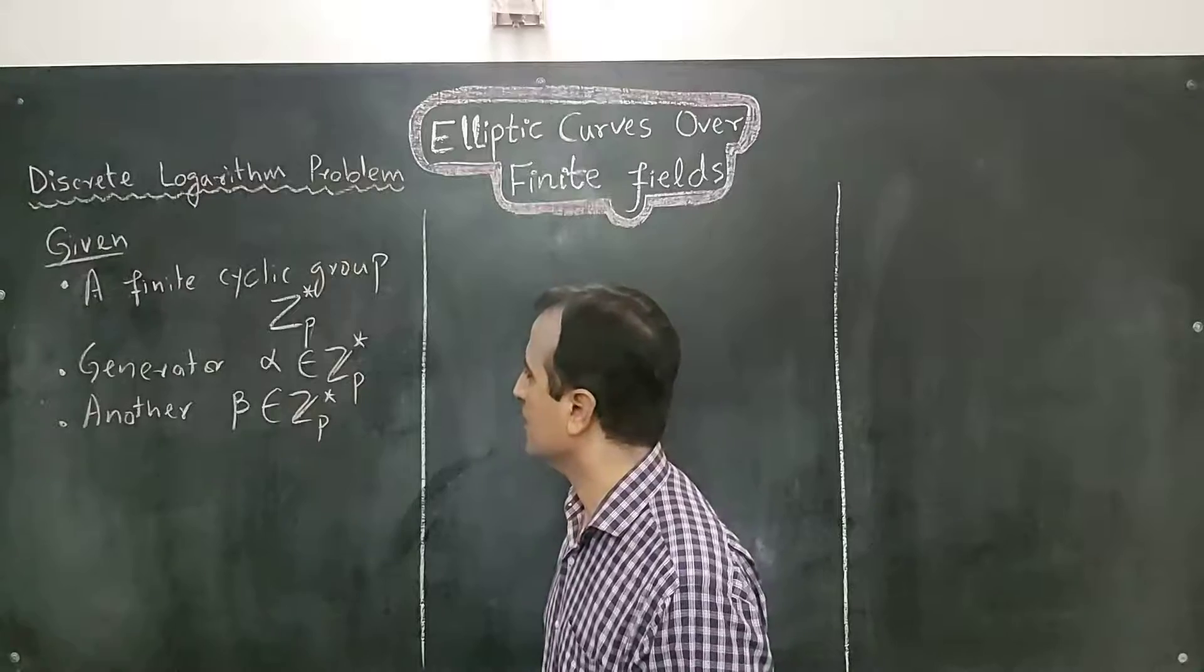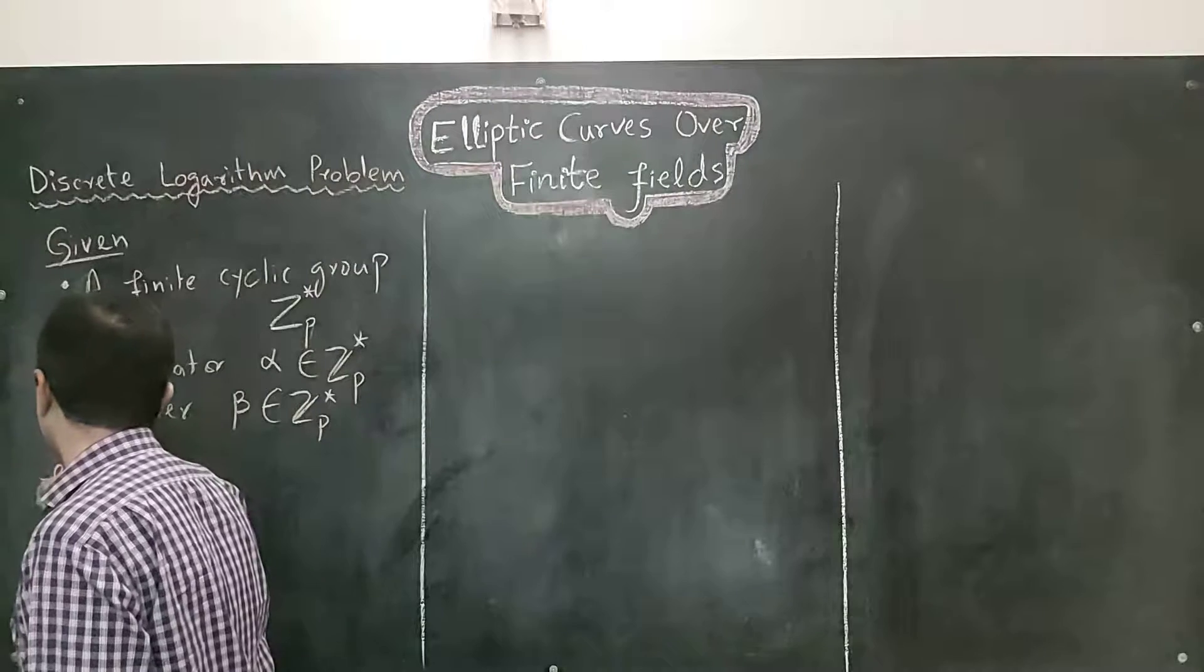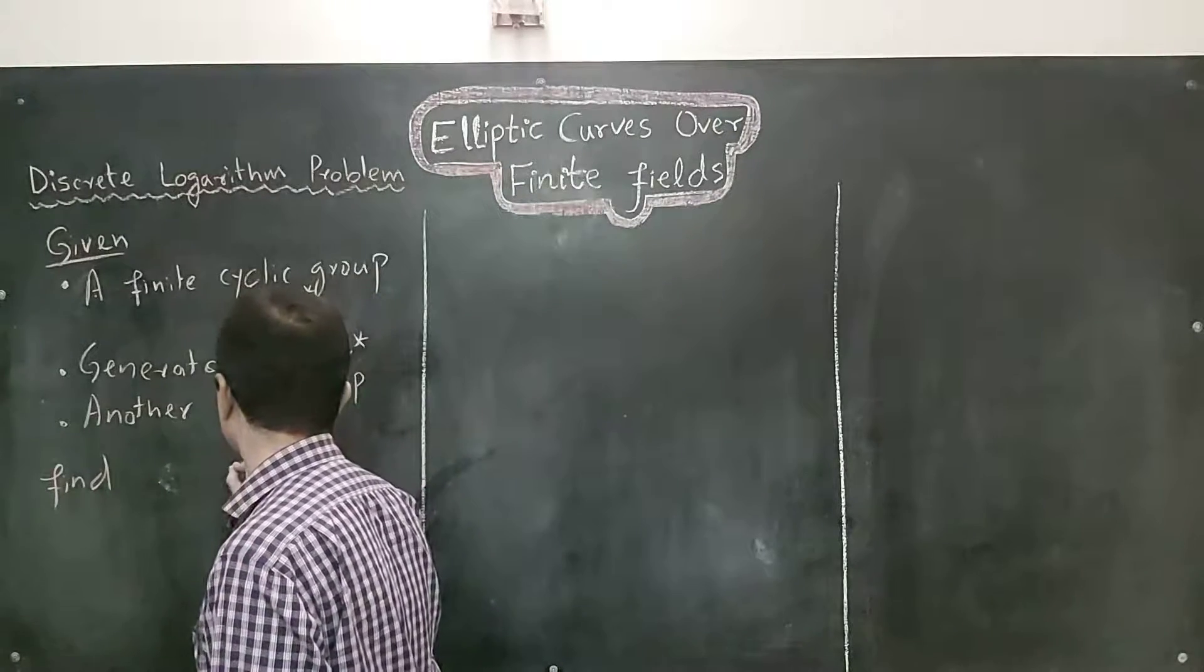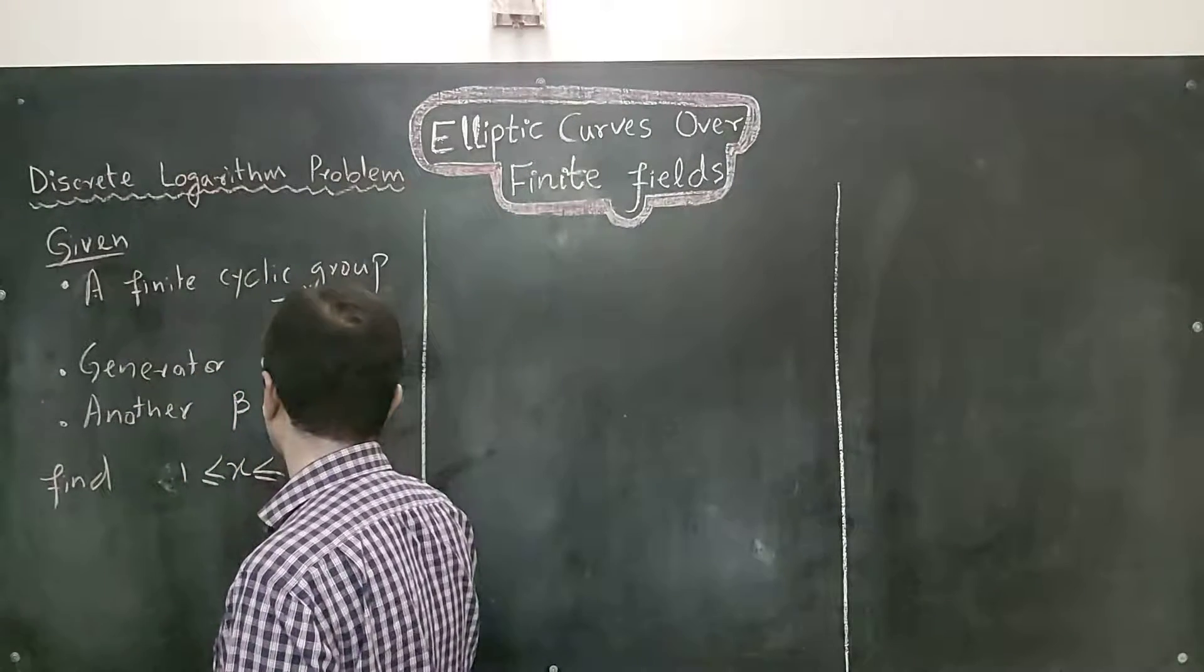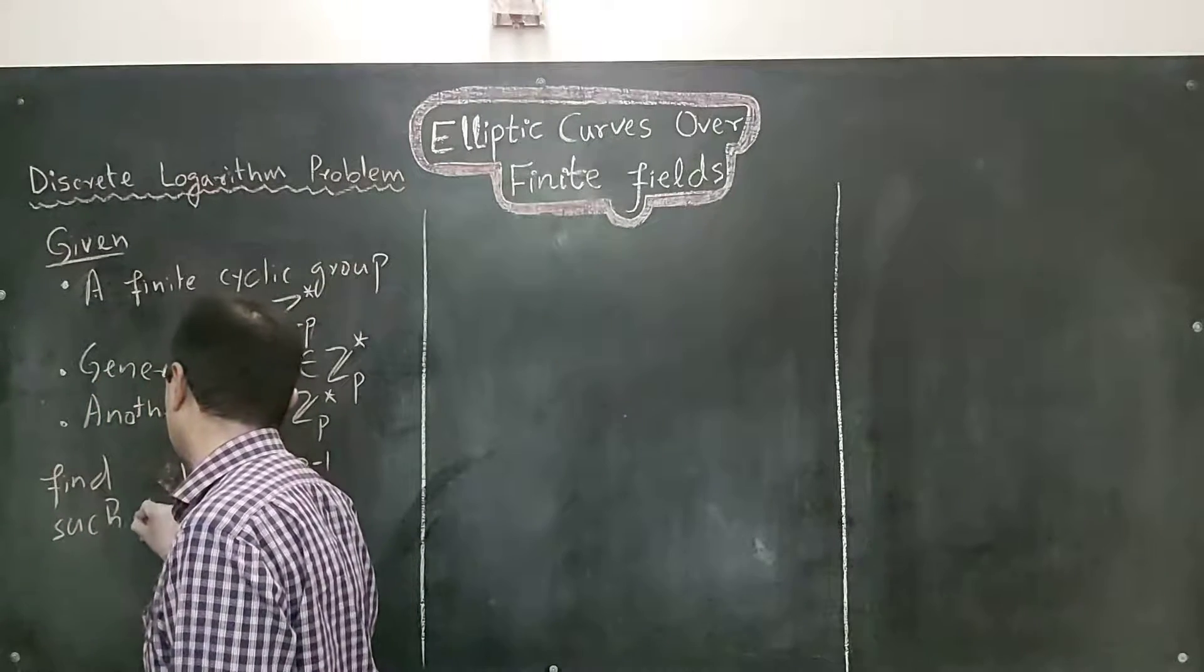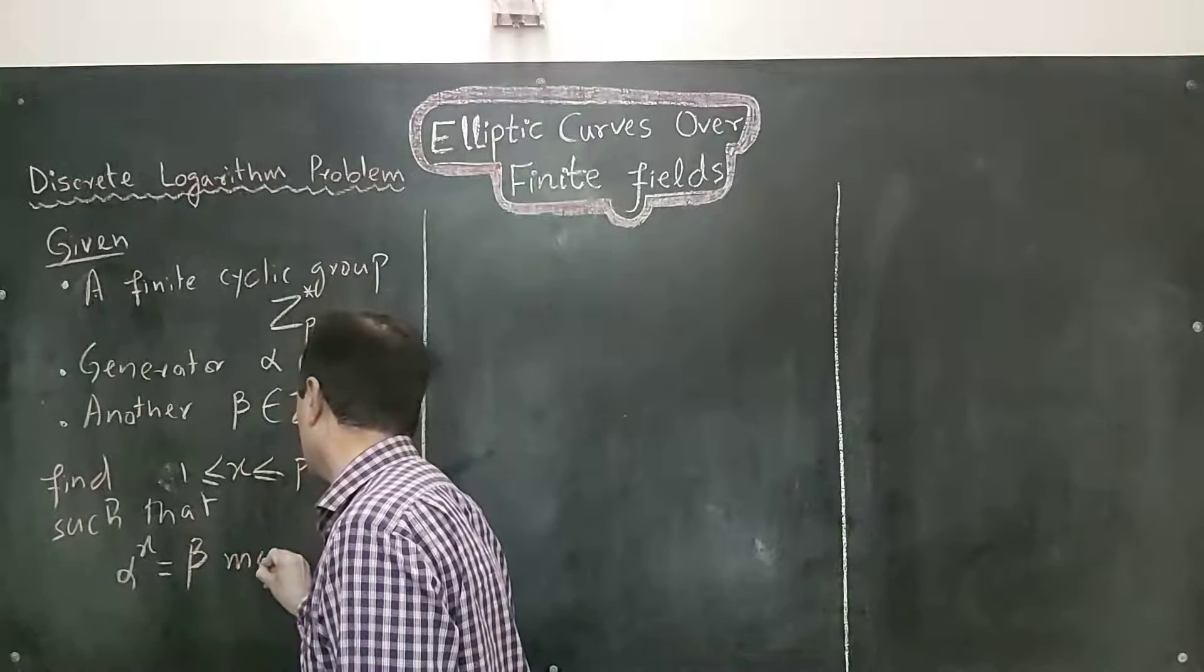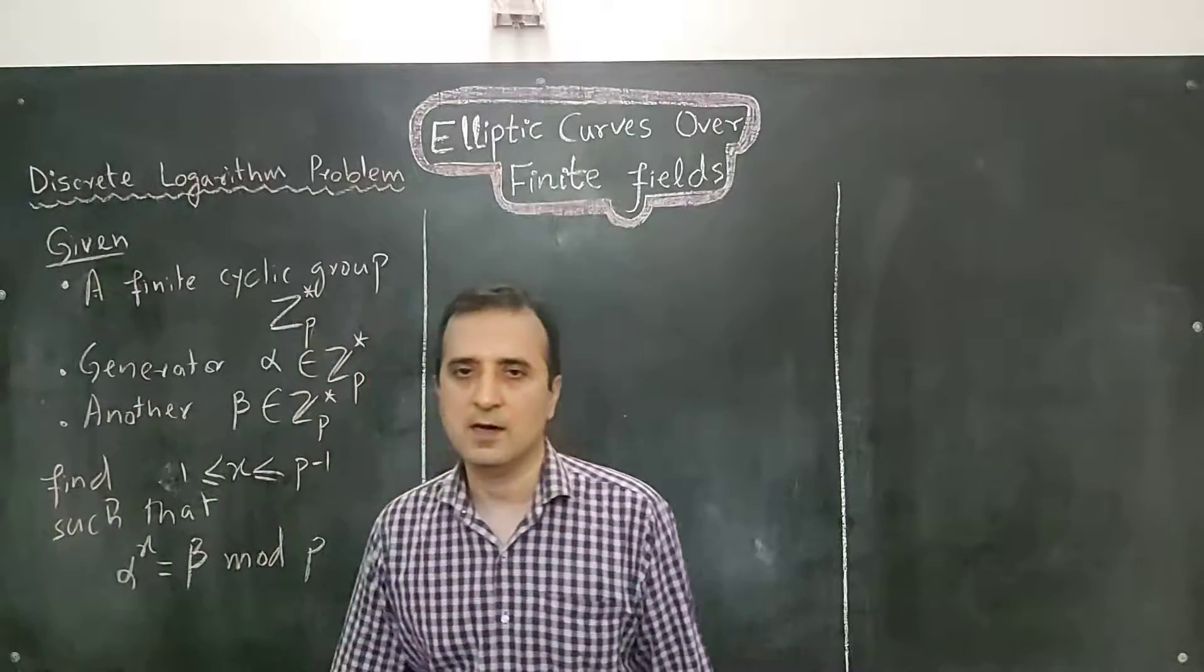Discrete logarithm problem says that we have to find x. x must be between 1 and p minus 1 such that alpha raised to power x is equals to beta mod p.